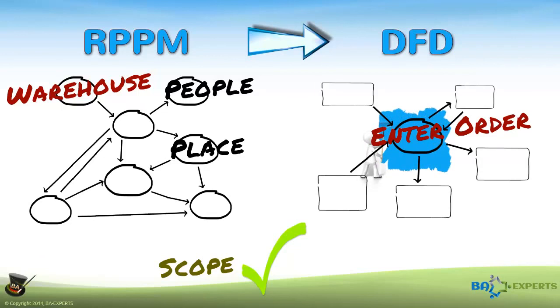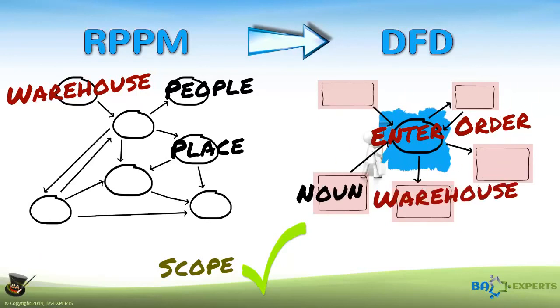People or places that are out of scope for our project are external entities, represented by a square with a noun name on a DFD. This distinction is what makes the project scope stand out on a context level DFD.